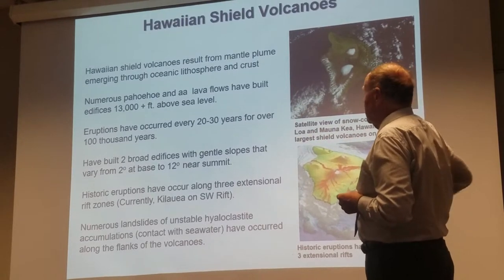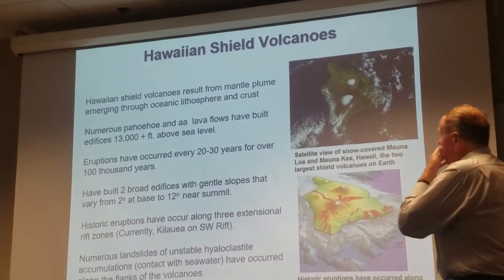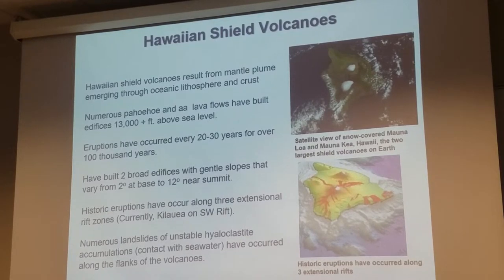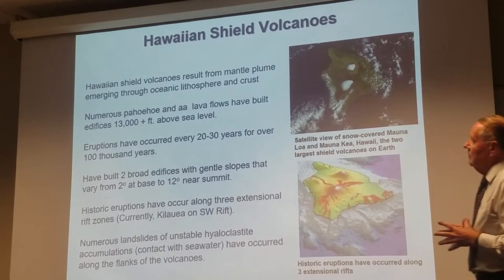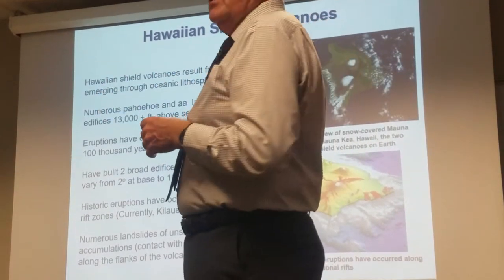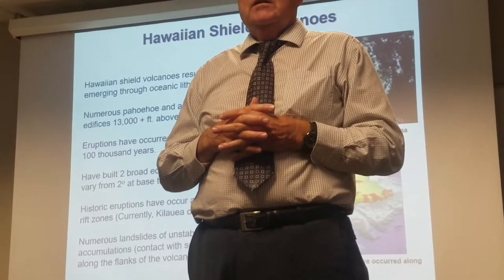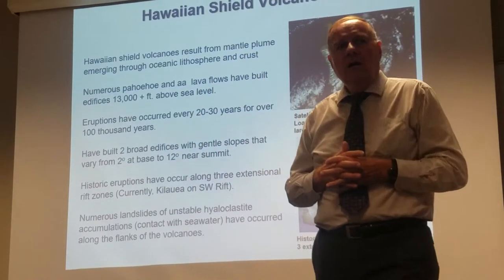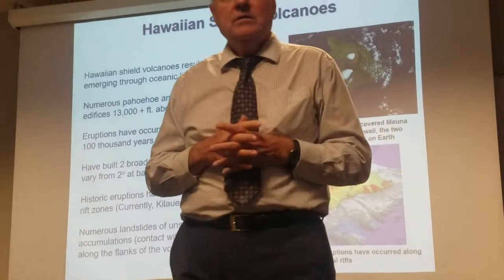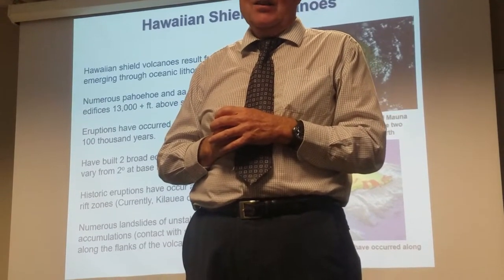The Hawaiian Islands were each formed as the Pacific Plate moved over the plume. These are basically just a series of pahoehoe flows with minor amounts of aa lava. These eruptions occur about every 20 to 30 years. Mauna Loa hasn't erupted in probably several hundred years, but Mauna Kea erupted last in the late 1800s.